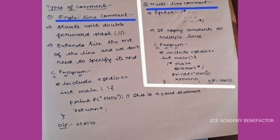Let's check a C program. First, we'll include the stdio library. Then in main, near printf, we're writing a single line comment with double forward slash. This will not be executed. It's just for user understanding that printf is a print statement. The output will be hello.